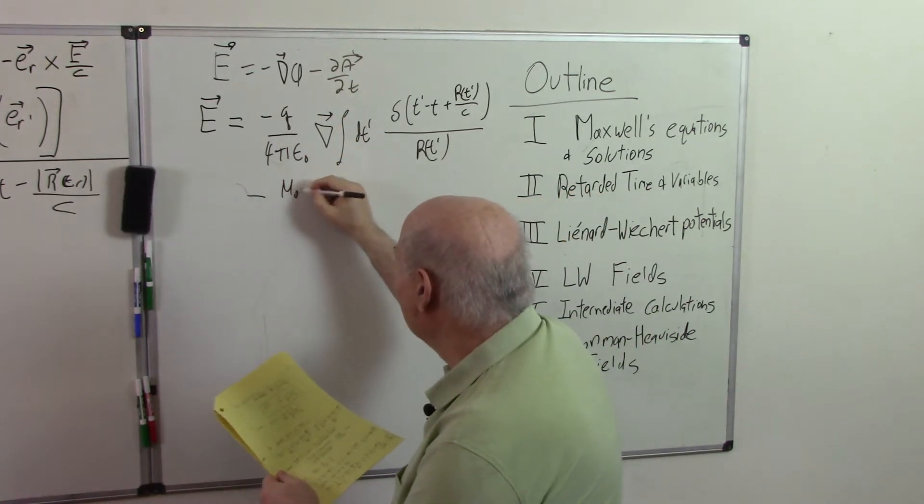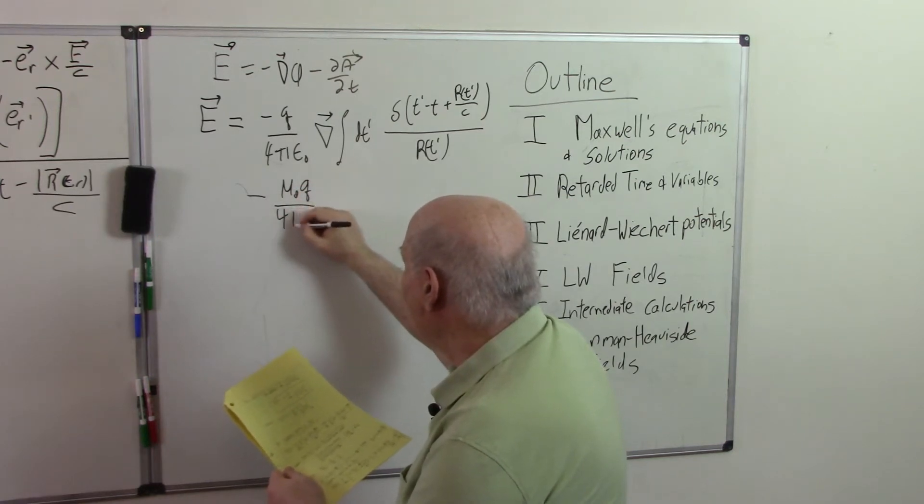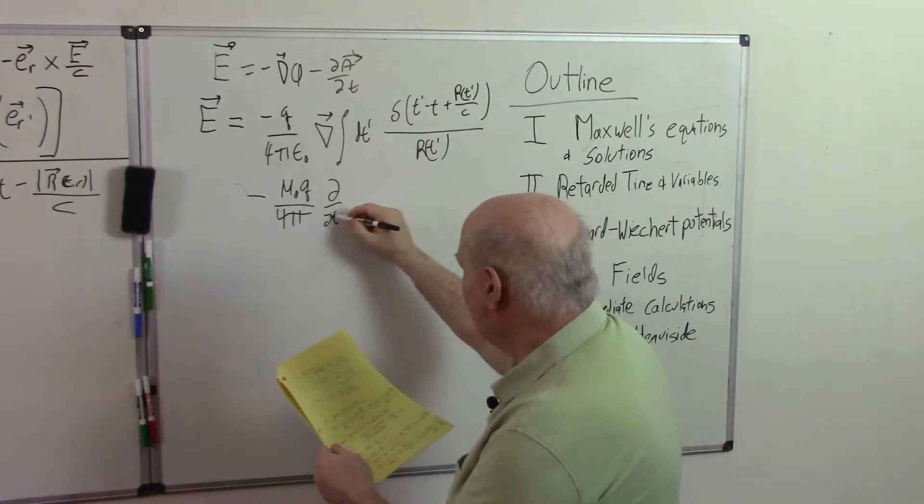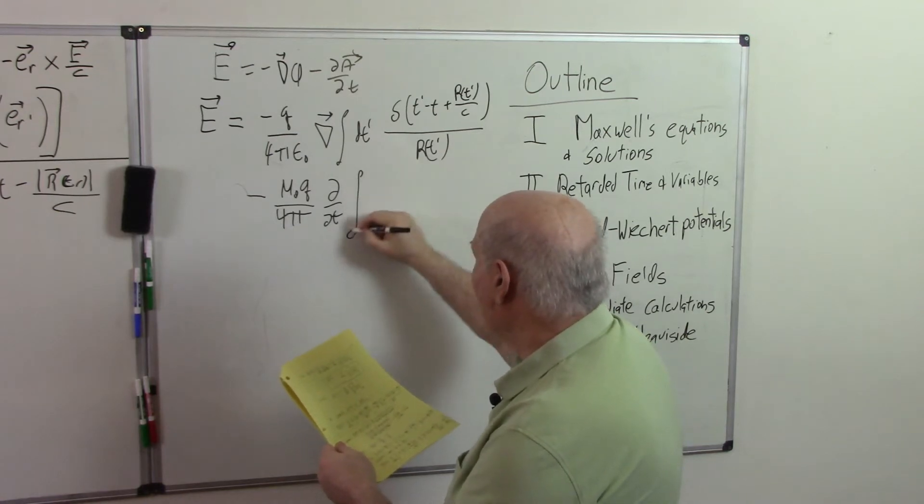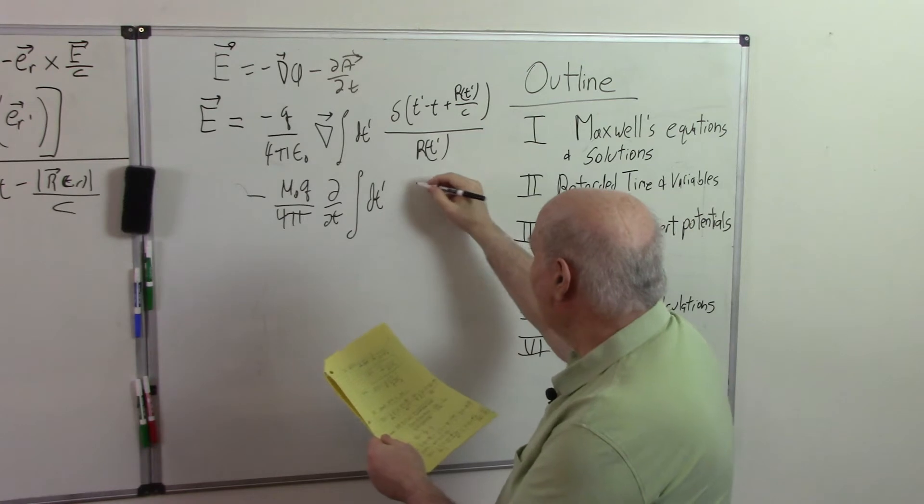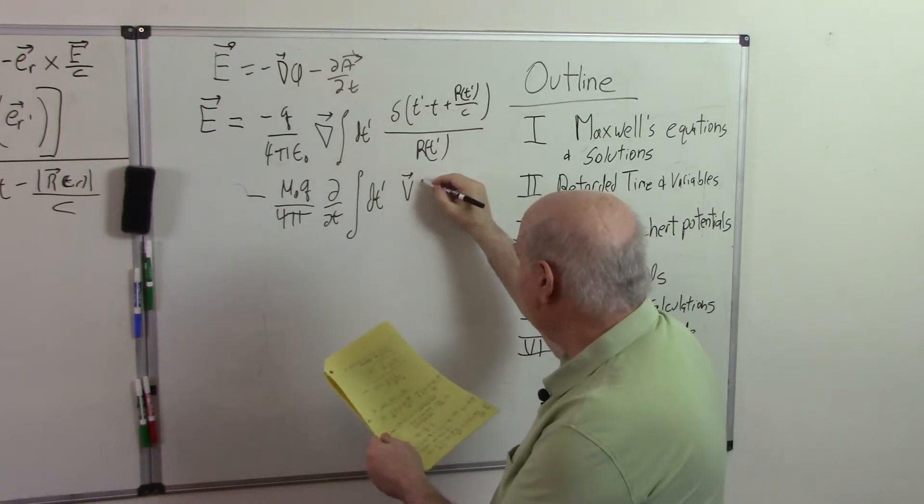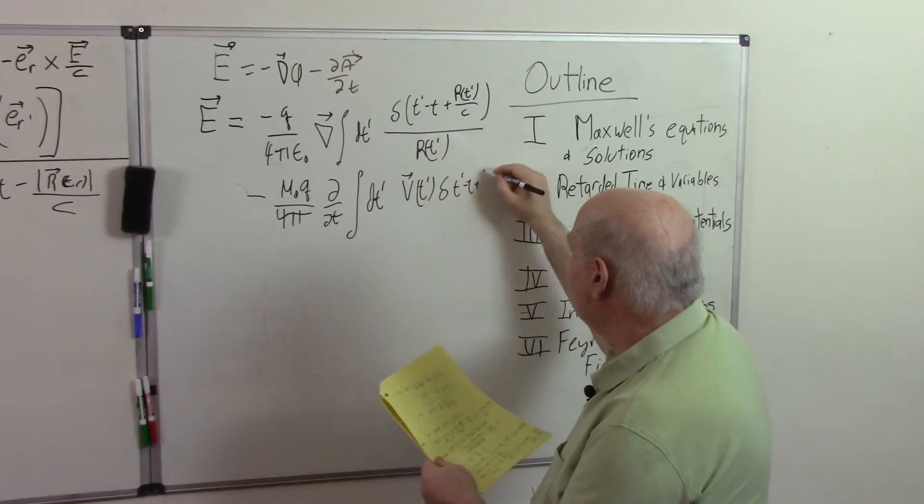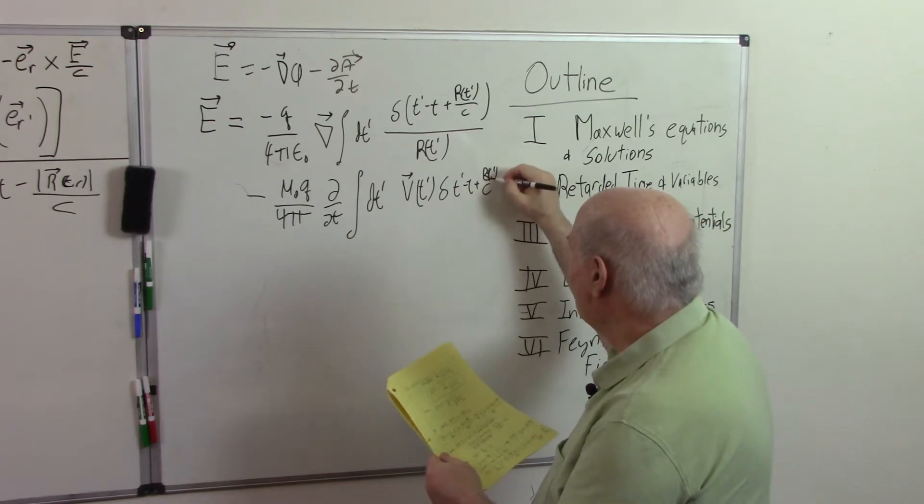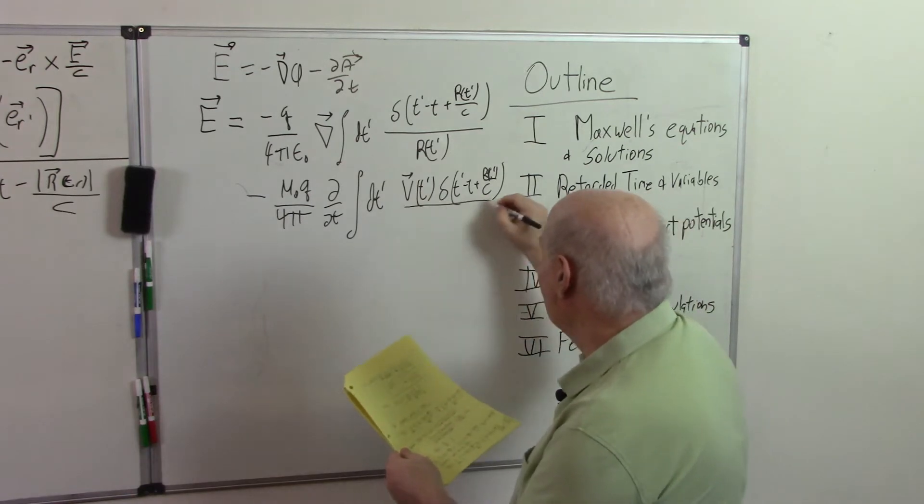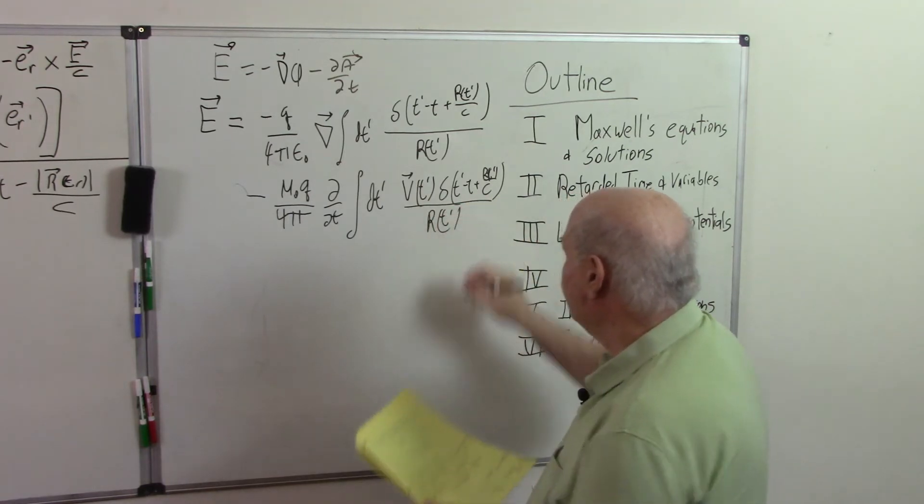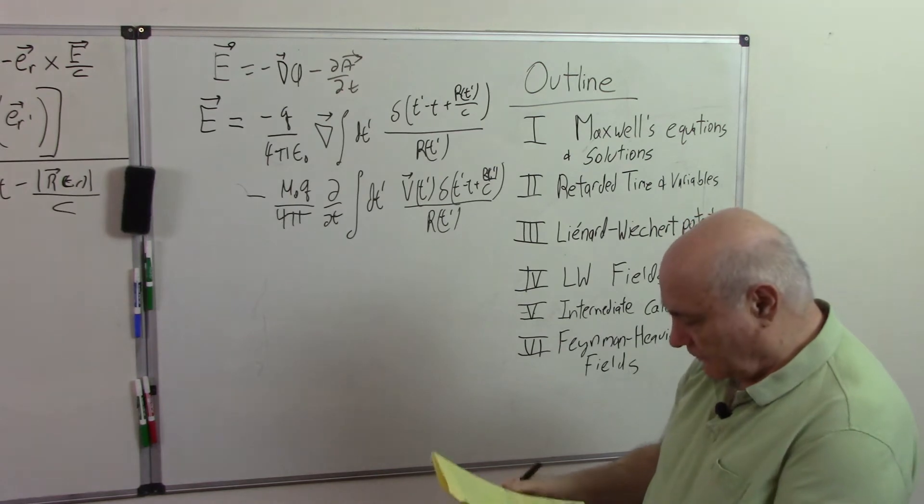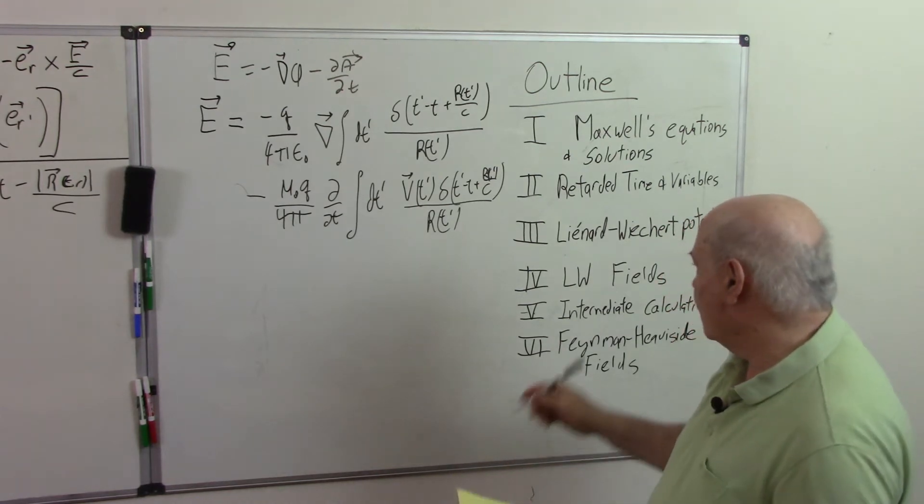And then minus mu zero Q over 4 pi, partial with respect to T, the velocity of the integral of DT prime, the velocity, the retarded velocity of the charged particle, same delta function, over R of T prime. So we use these forms for phi and A to derive the Lienard-Wiechert potentials. Now we're going to do a similar derivation for the fields.